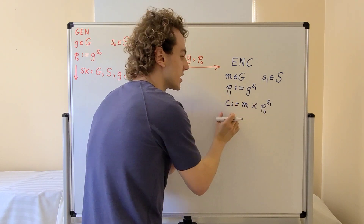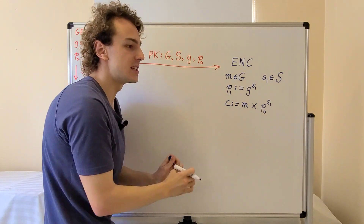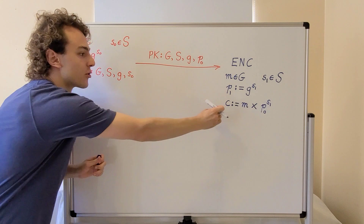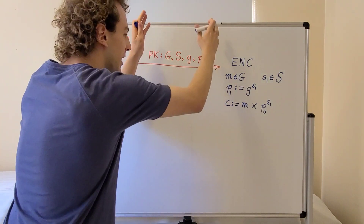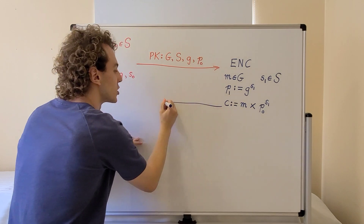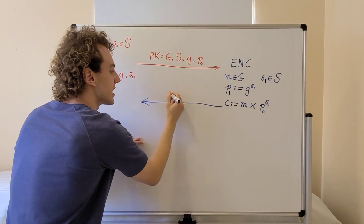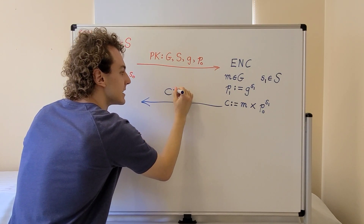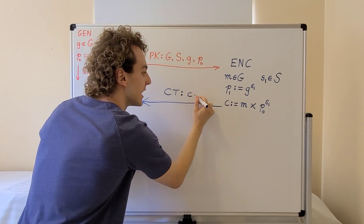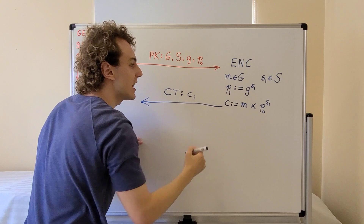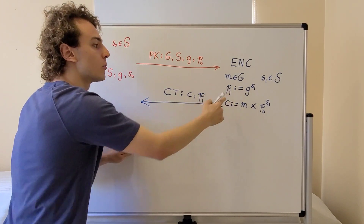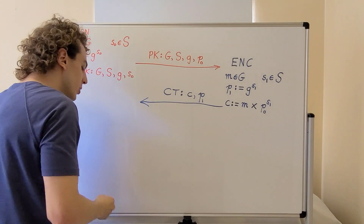The message is now encrypted as the ciphertext. We send the ciphertext through a public channel. The ciphertext CT includes the value c and also the public value p1, and this public value p1 will be used in decryption.